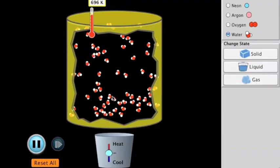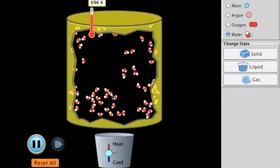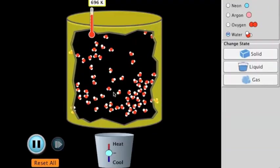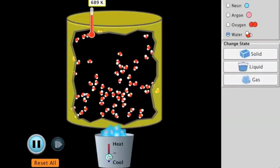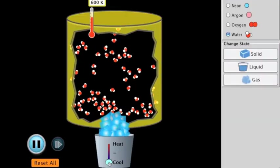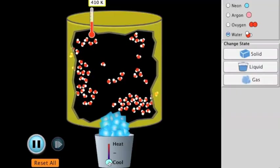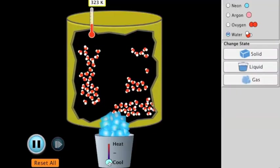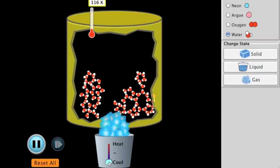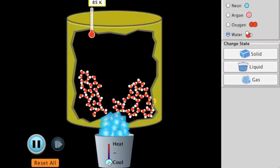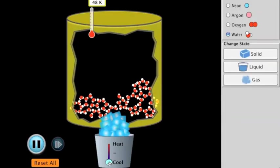When the particles gain energy, they move faster. If we cool this system down, it's not that the particles are moving slower because of the ice. It's because when the particles, hypothetically, bump into something cold, they lose energy. And when they lose energy, they start to move slower and slower and slower.